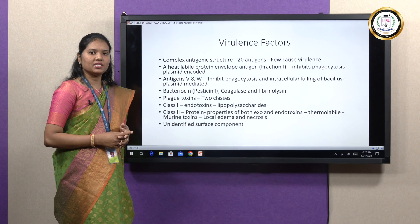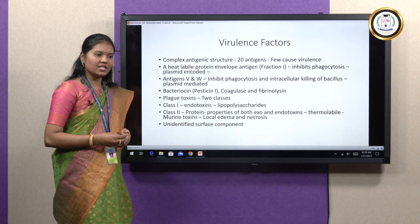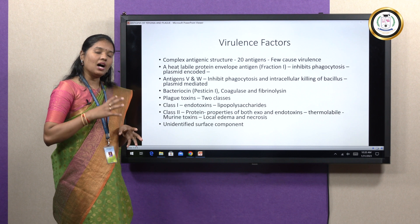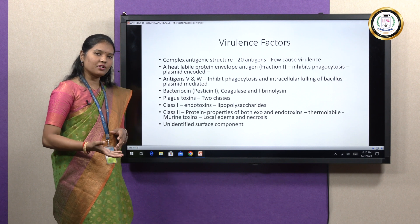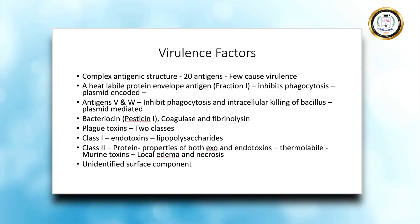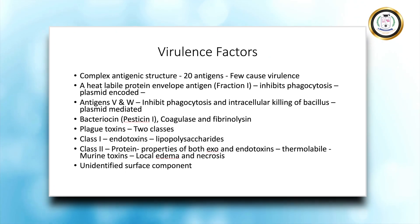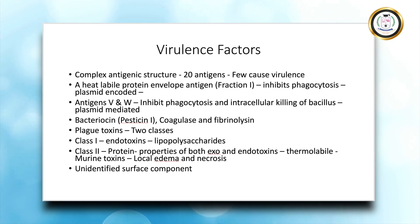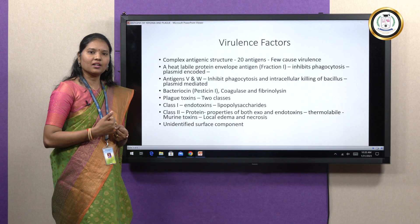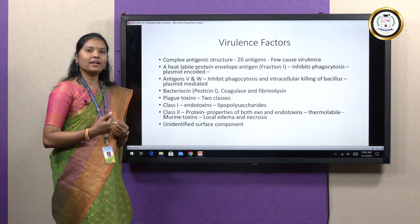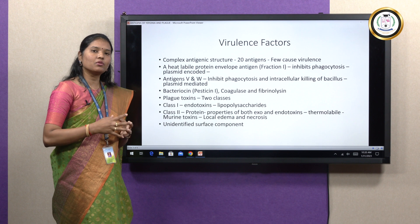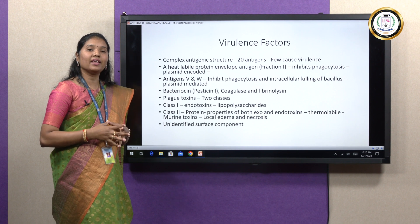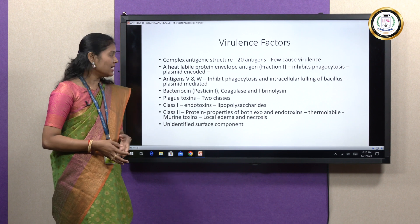Another substance called bacteriocin or pesticin, produced by Yersinia pestis, is able to inhibit other species of Yersinia. There is also an unidentified surface component which is able to take up all aromatic dyes when grown on culture media, forming colored colonies.